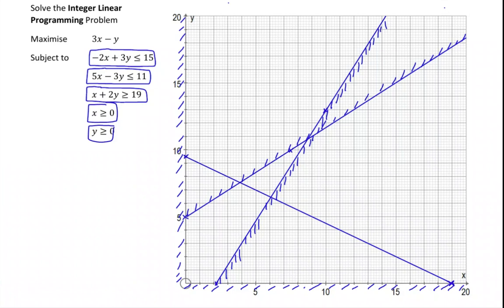0, 0 isn't on the line. So is 0 plus 0 greater than or equal to 19? No it's not. So 0, 0 is not in the region I want, so I'm going to shade the region I don't want, which is this bit here. We now have our feasible region. The feasible region is here. That's our feasible region.